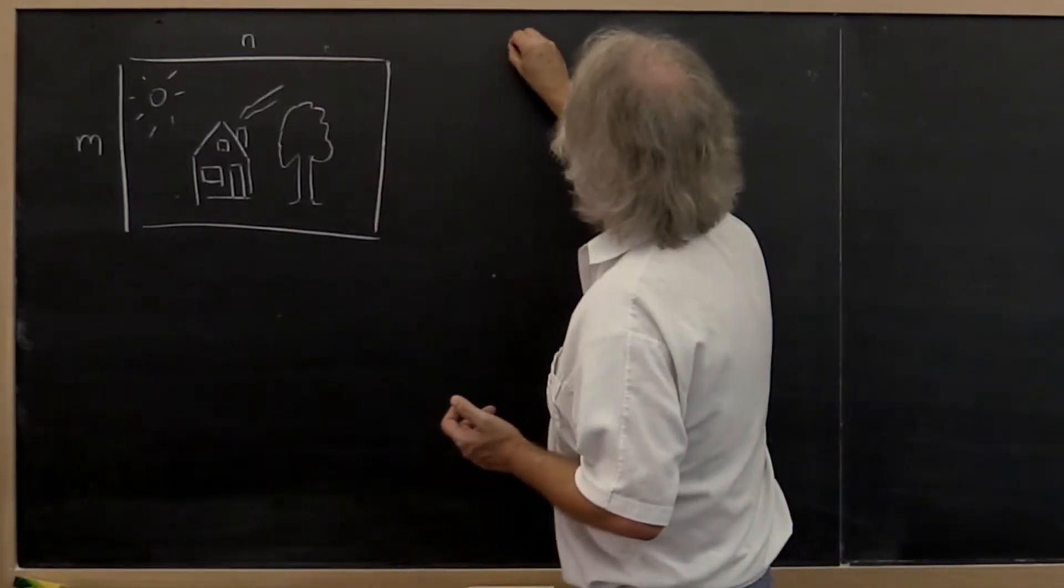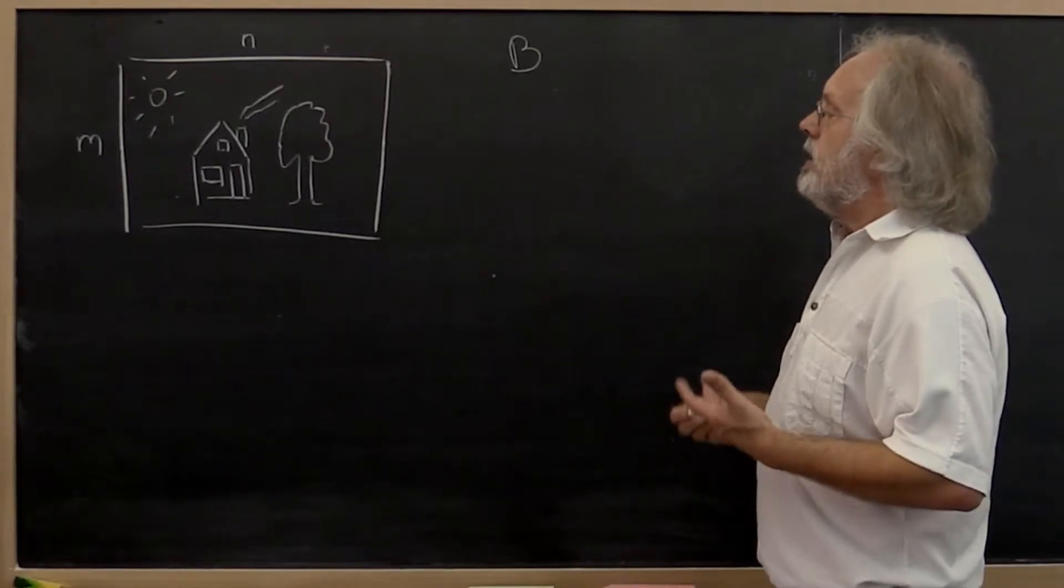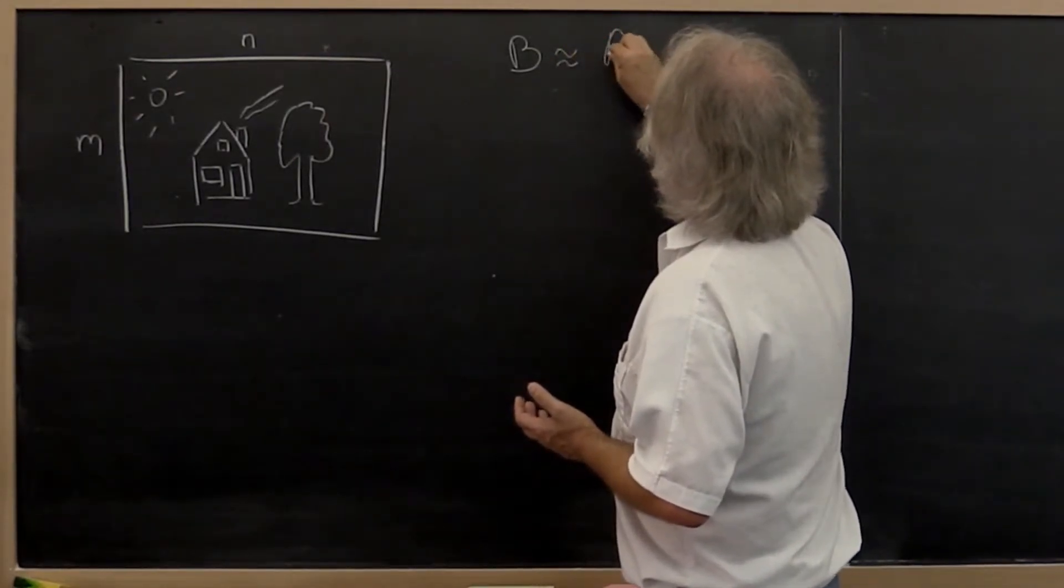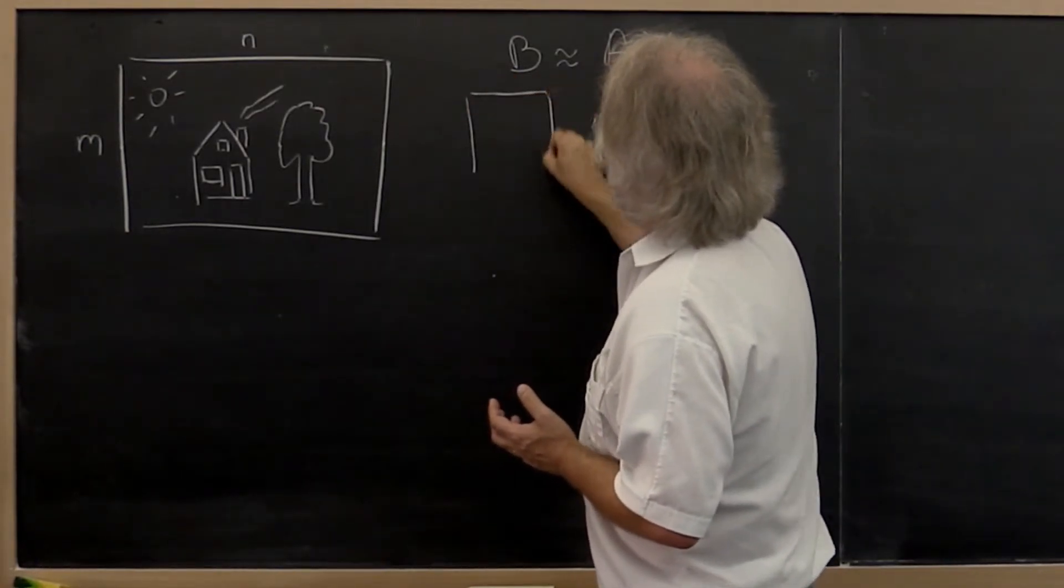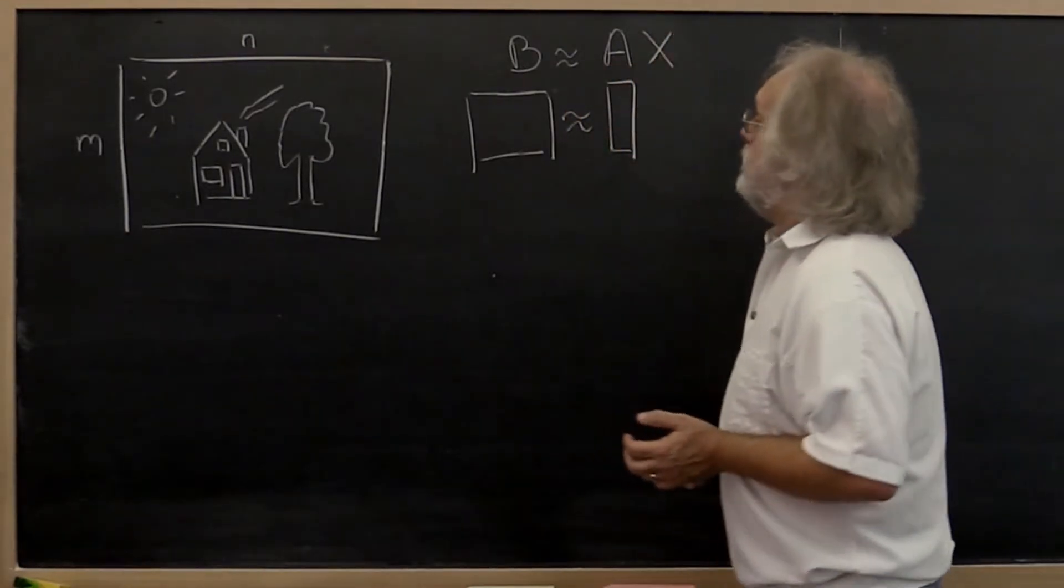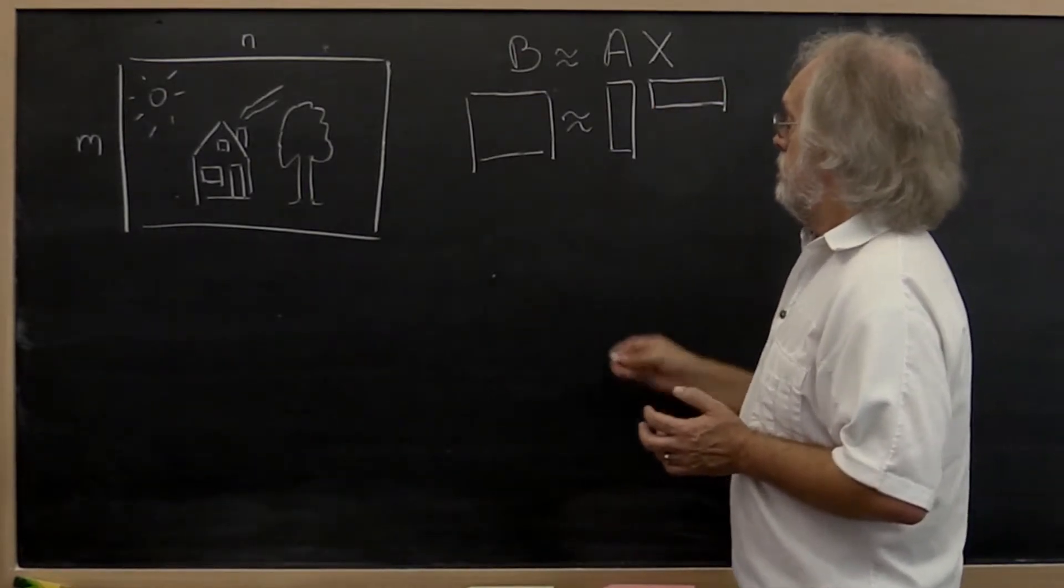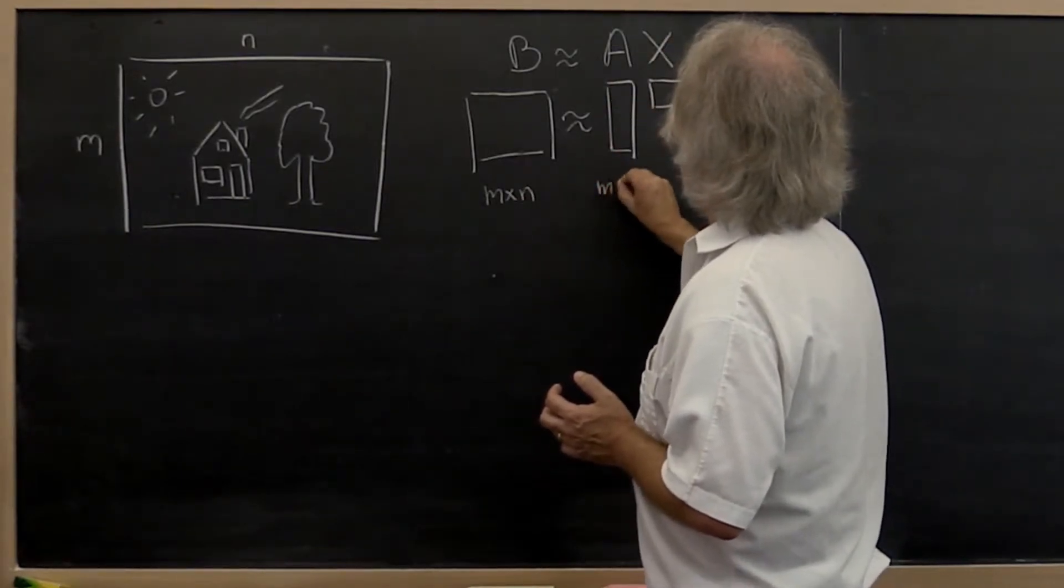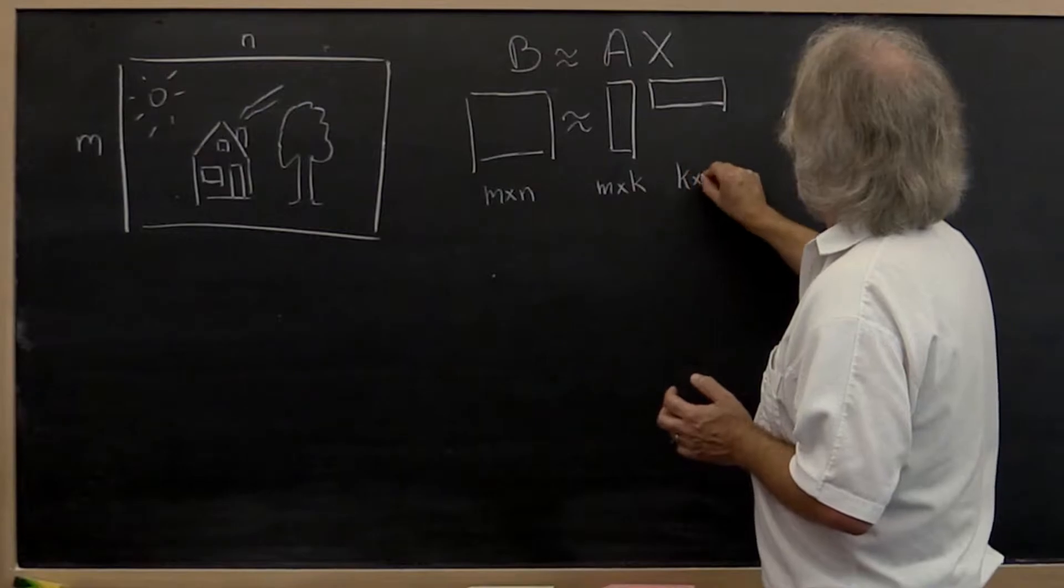If we call this the matrix B, then what we may want to do is approximate this with a matrix A times a matrix X, where the idea is that matrix B is the entire picture, A is a matrix with only a few columns, and X is a matrix with only a few rows. B is m by n, A is m by k, and X is k by n.